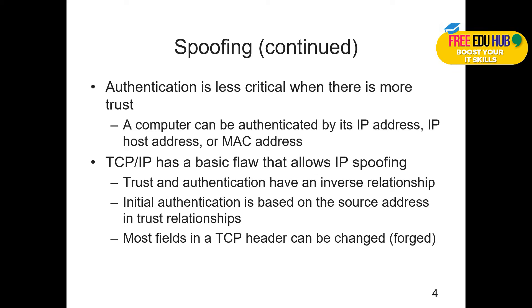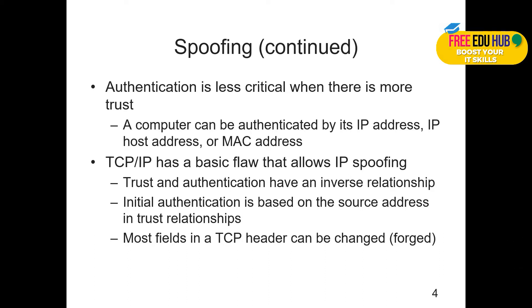Authentication is less critical when there is more trust — if I trust you, the communication is authenticated. A computer can be authenticated by its IP address, host name, or MAC address. All this information is usually kept inside the RIP router, where the host IP and MAC address are constantly flowing. The router says it trusts this information and passes it on.